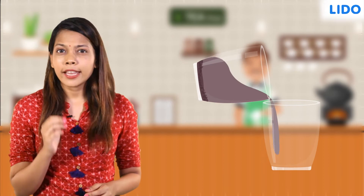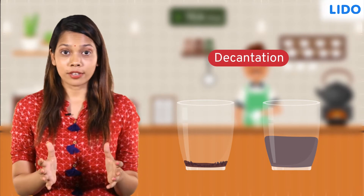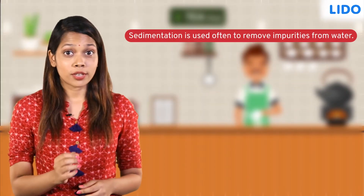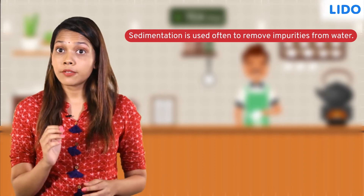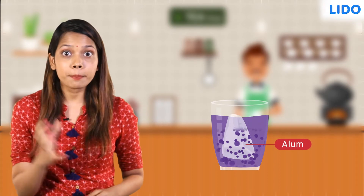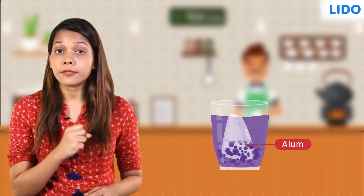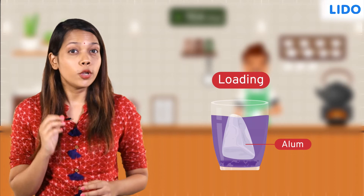If you slowly pour the liquid into another container without disturbing the sediment, the process is called decantation. Sedimentation is used often to remove impurities from water. Sometimes a chemical substance like alum is added to speed up the process of sedimentation, and this method is called loading.